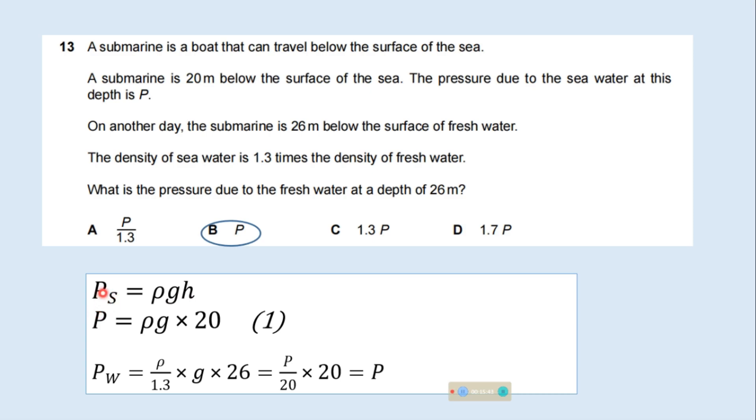The pressure for sea water equals rho g h, which is capital P equals rho g multiplied by h, 20 meters. The pressure for fresh water will be rho g h. The density of fresh water equals density of sea water divided by 1.3 multiplied by g multiplied by 26. Solve this equation, you get P. Pressure of water equals P. We can put the value of rho g from equation 1 and equation 2. Rho g equals P by 20. Put the value of rho g here and solve. We will get Pw equals P. Here Pw stands for pressure for water, Ps pressure for sea water, and capital P is given here.